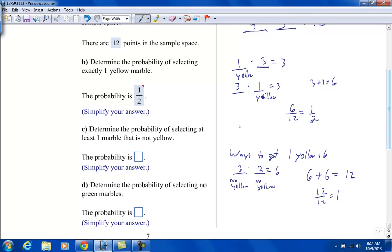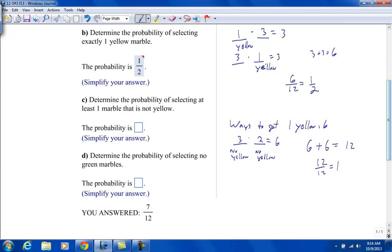Part D, determine the probability of selecting no green marbles. That means no green, no green. There are four marbles. Three of them are not green for the first one. After that one's used up, two of them are not green for the second one. Three times two is six. So it would be six over twelve, which is one-half.